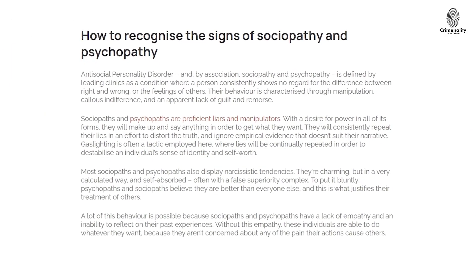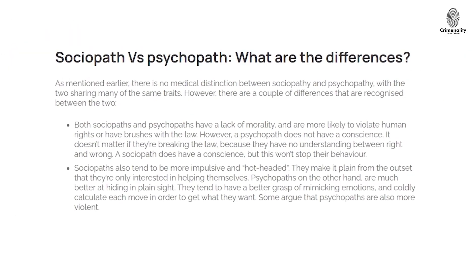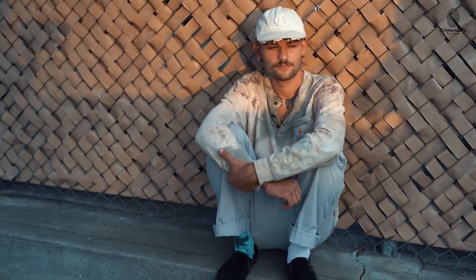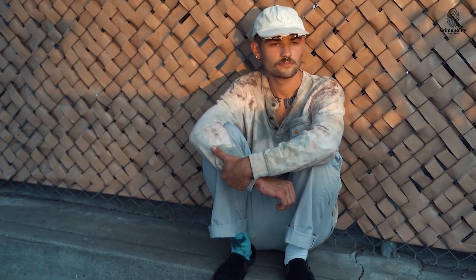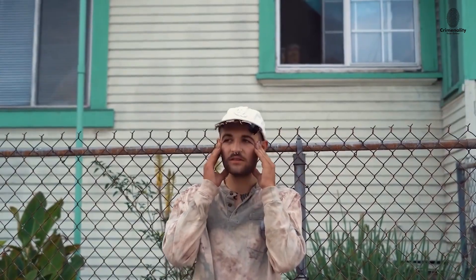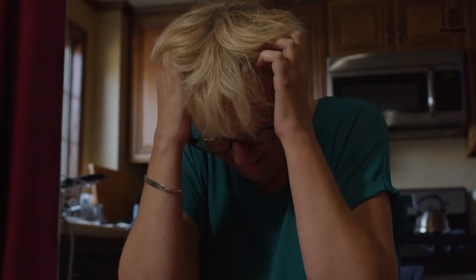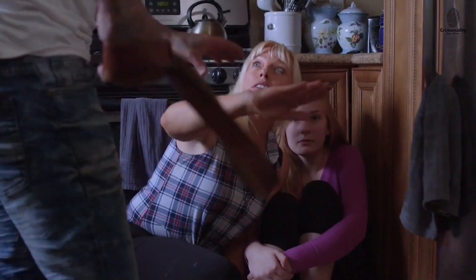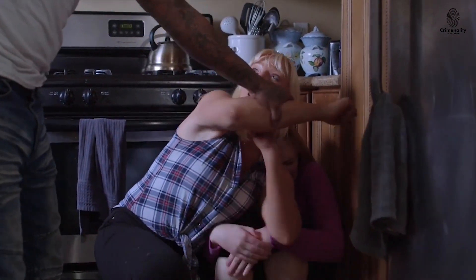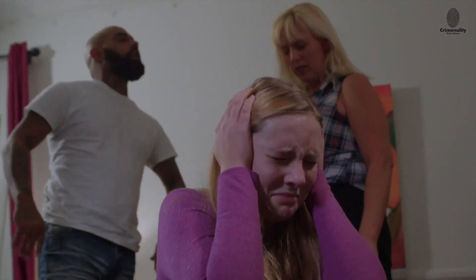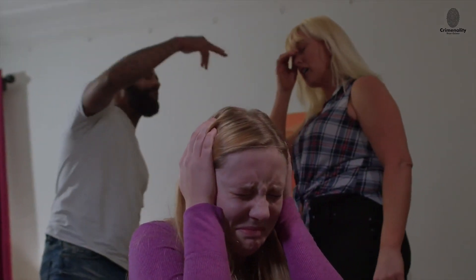Because they are frequently used interchangeably yet are not synonymous with one another, the terms sociopath and psychopath can be confusing. But there is a distinction. Sociopaths are people whose callous, dishonest behavior is mostly influenced by their surroundings, such as witnessing child maltreatment or being exposed to others' expedient behavior.